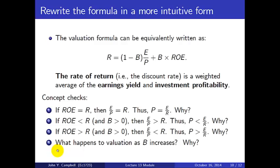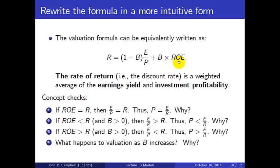A final question: what happens to valuation as B increases? That depends on whether ROE is greater than or less than R. If ROE is greater than R, then reinvesting increases firm value because the reinvestment is profitable — it earns more than the cost of capital. If ROE is less than R, then increasing B lowers firm value. And if ROE equals R, then B cancels out and has no effect.